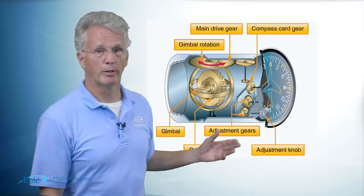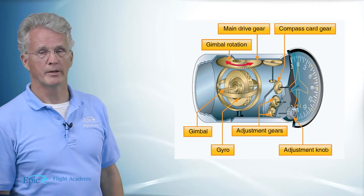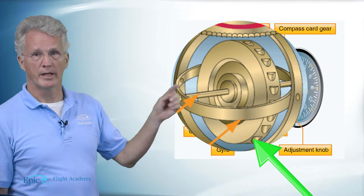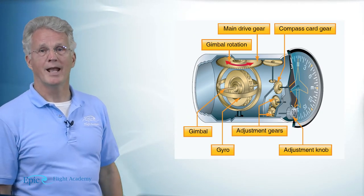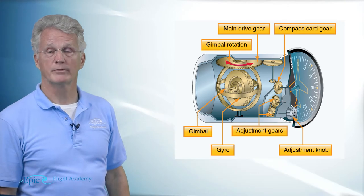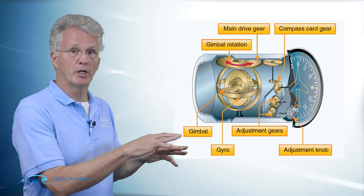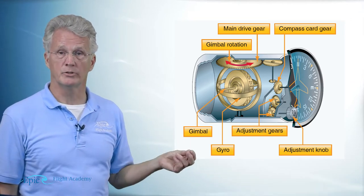Here's a little blow up of that heading indicator. Now do you see the gyro and you see the little cups on the gyro. Now that gyro spins real fast, it maintains rigidity, and as the aircraft rolls into a bank and is allowed to change heading, forces are applied to that little gyro.